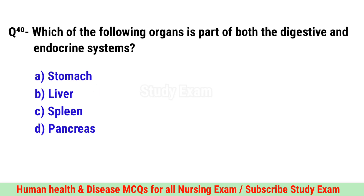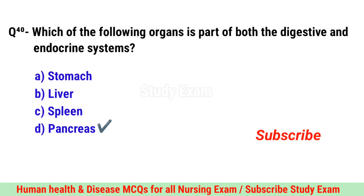Question No. 40. Which of the following organ is part of both the digestive and endocrine system? Correct option is D. Pancreas.